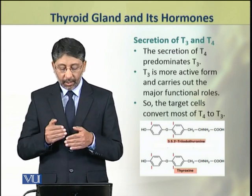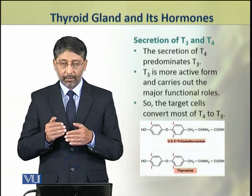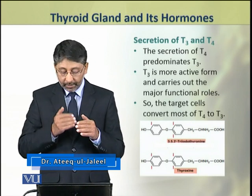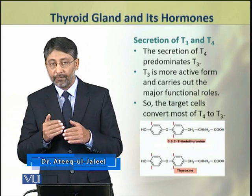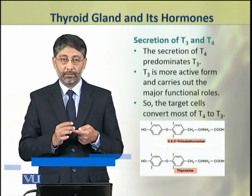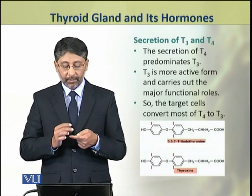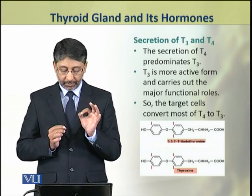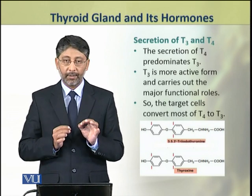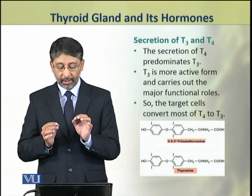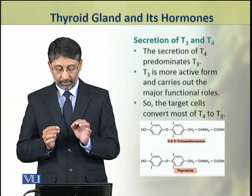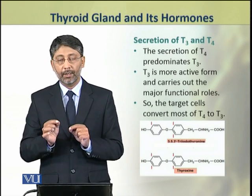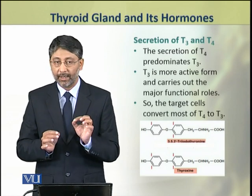Regarding the secretion of T3 and T4: the secretion of T4 dominates that of T3. However, T3 is the more active form and carries the major metabolic functions. Therefore, target cells mostly convert T4 into T3, which is the active form.